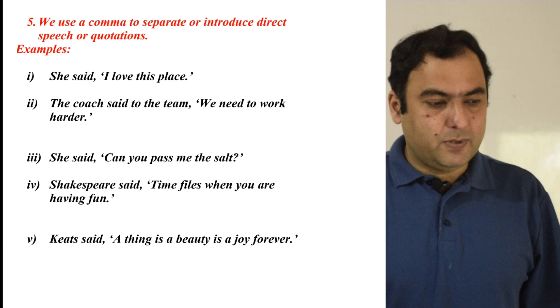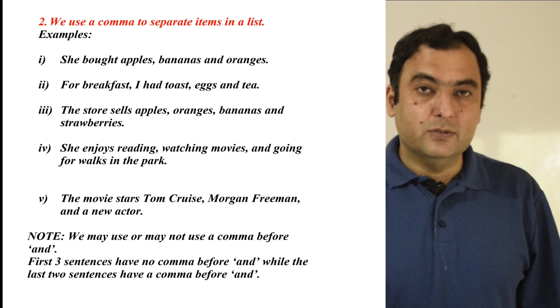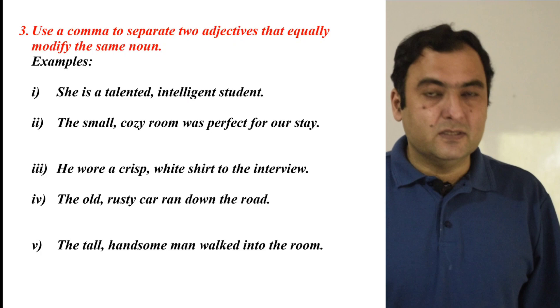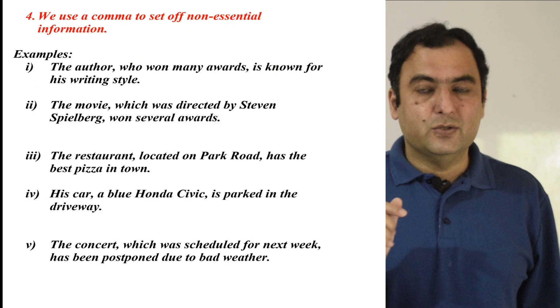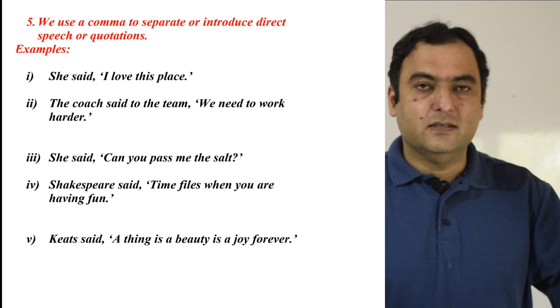Let's have a quick recap. We did five uses. First, we use a comma after introductory words, phrases, or clauses. Second, we use a comma to separate items in a list. Third, we use a comma to separate two adjectives that equally qualify the same noun. Fourth, we use a comma to set off non-essential information in a sentence. Fifth, we use a comma to separate or introduce direct speech. Thank you very much for watching this video. I hope you found it useful. If you did, please give it a like, share it with your friends, and subscribe to this channel. Part two is coming soon. See you.